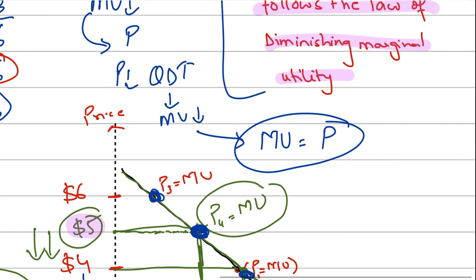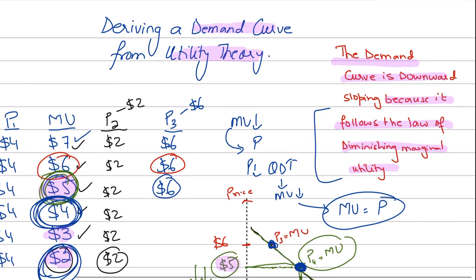Whenever the question asks how a demand curve is drawn using the concepts of utility, this is how you relate it. Remember: you're not just going to draw the demand curve — you need to explain why it is downward sloping, what the points on the demand curve represent, how rational consumer behavior correlates to the downward slope, and how you actually construct a demand curve using marginal utility theory. This is how you construct a demand curve using marginal utility theory. I hope you enjoyed this video — see you in the next one, take care.